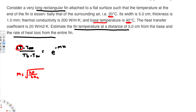To find the m value, there is another equation: m = √(hP / kAc). Here h is the heat transfer coefficient, P is the perimeter, k is thermal conductivity, and Ac is the cross-sectional area. Heat transfer coefficient is provided, so let's plug in all the values.